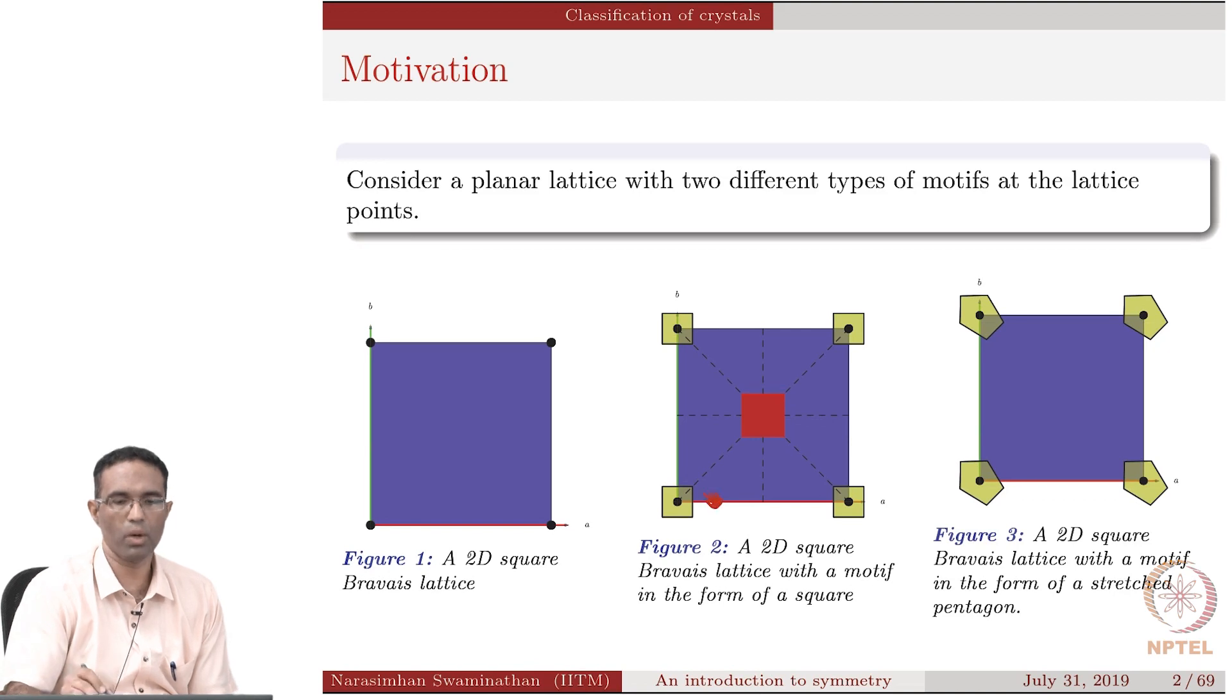Maybe a square, looks like a square. That is the motif and this is going to be repeated in all the two directions. Now, if you look at it, what are the kinds of symmetry that you can actually see? Like for example, if you take, if you put a mirror here.